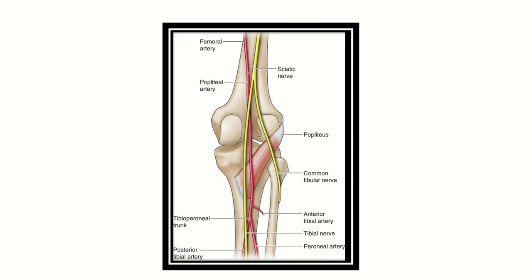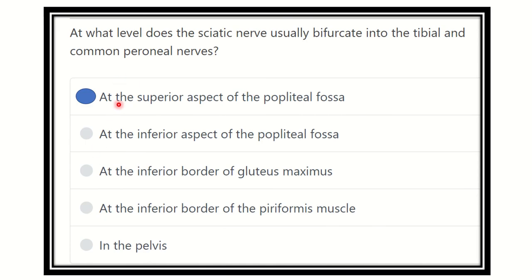In this image we can also see the diamond-shaped popliteal fossa, where at the upper part the sciatic nerve divides into the tibial nerve medially and the common peroneal nerve laterally. Therefore, our answer is the superior aspect of the popliteal fossa — this is where the sciatic nerve divides into the tibial nerve and common peroneal nerve.